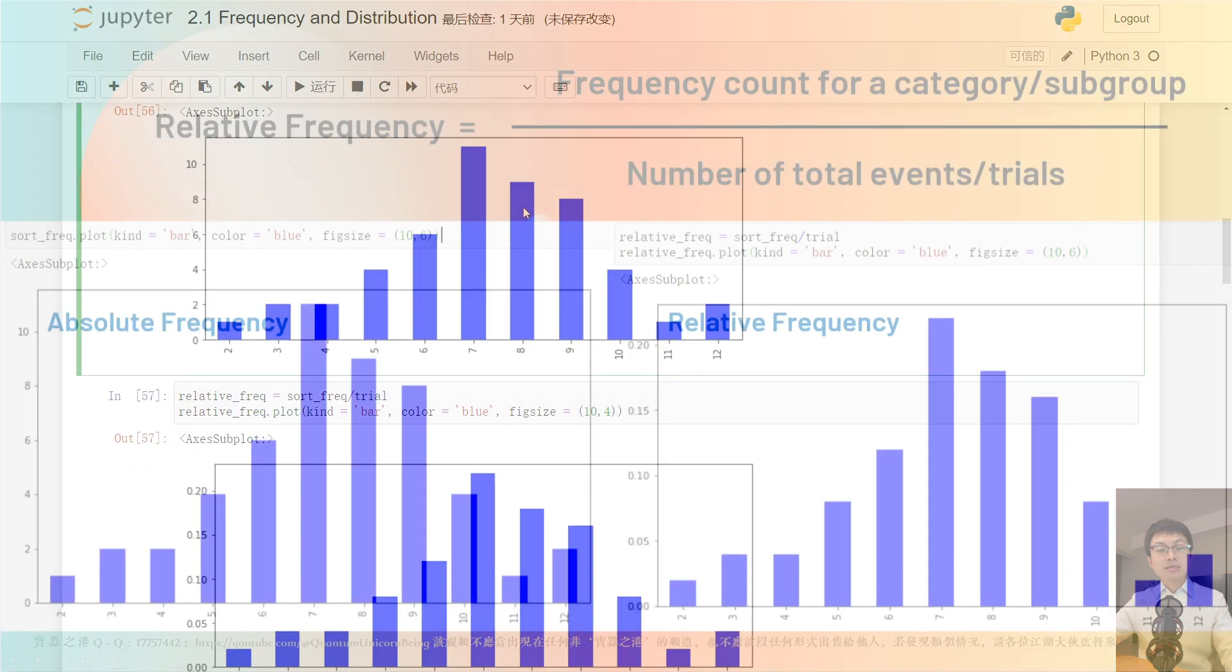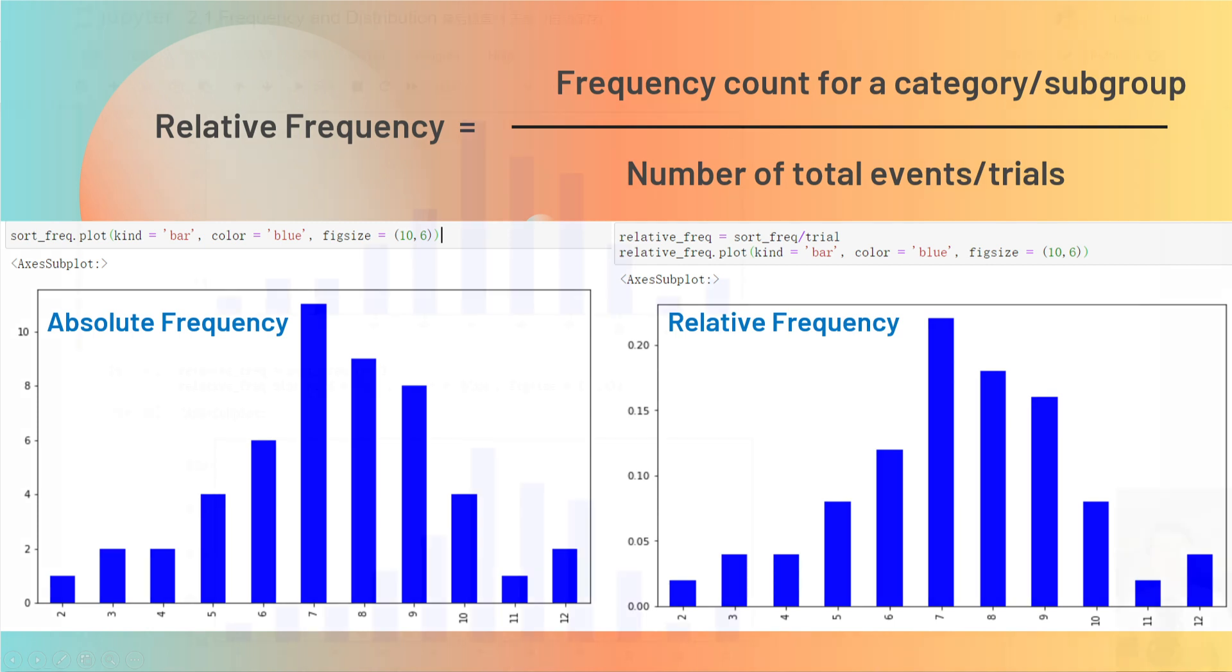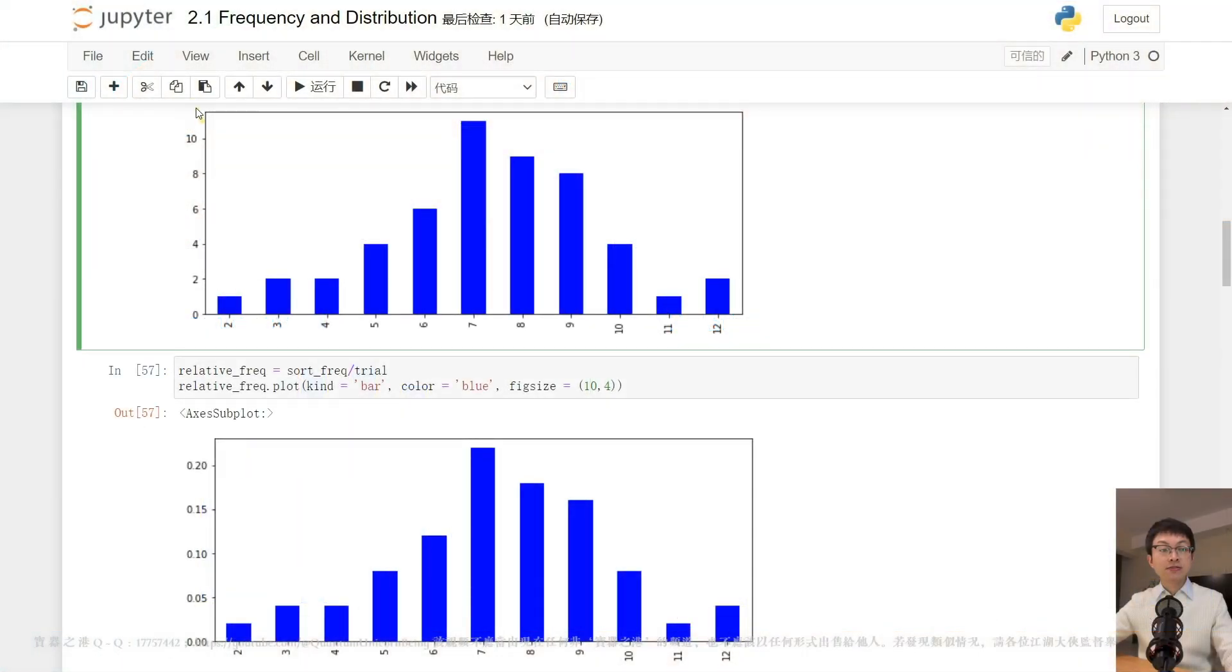So the relative frequency is equal to the number of frequency of each outcome divided by the total number of trials, which is 50 in our case. This transformation does not affect the shape of the bar chart but alters the scale of the y-axis.